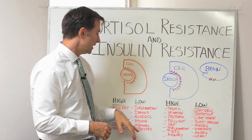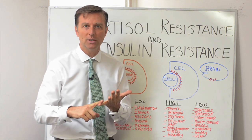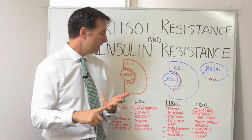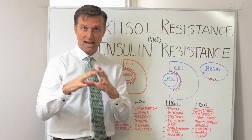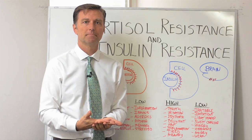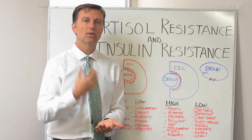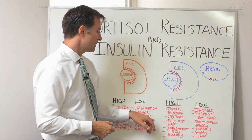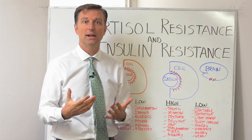Think about what they give people for autoimmune, for inflammation, and for skin reaction issues — they give them prednisone. What is prednisone? Prednisone is cortisol. It's an adrenal hormone. A lot of allergy cases they also give you prednisone.